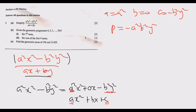We multiply a squared by negative b squared y squared to get the product: negative a squared b squared y squared. The sum is b, which in this case is 0. Once we discover that the sum is 0, we are in the case of the difference of two perfect squares.